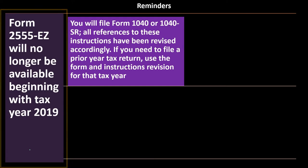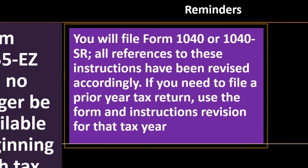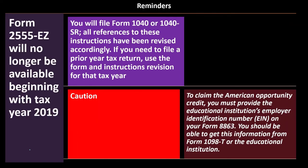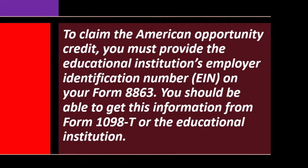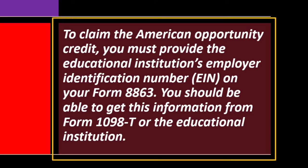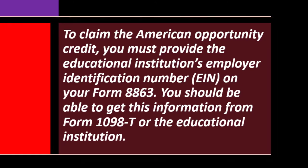Form 2555-EZ will no longer be available beginning with tax year 2019. You will file Form 1040 or 1040-SR, and all references in these instructions have been revised accordingly. If you need to file a prior year tax return, use the form and instructions revised for that tax year. Caution: to claim the American Opportunity Credit, you must provide the educational institution's employer identification number (EIN) on Form 8863, which you can find on the Form 1098-T or from the educational institution.